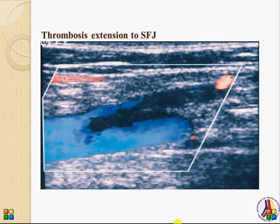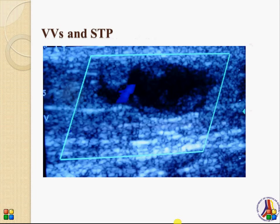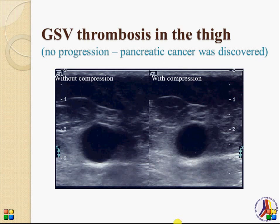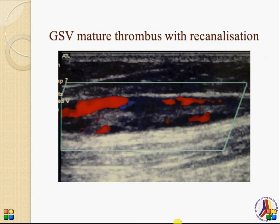This is a situation which we could more or less consider as deep vein thrombosis. Here you can see, without compression and with compression, an incompressible great saphenous vein trunk at the thigh — and this particular patient was later found to have pancreatic cancer. This is an old thrombus with signs of re-canalization with echogenic material inside the vein.